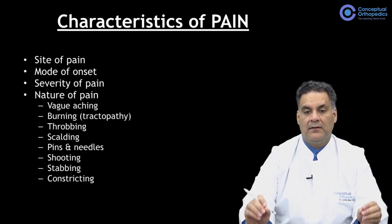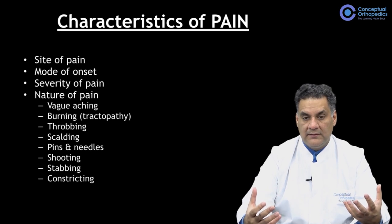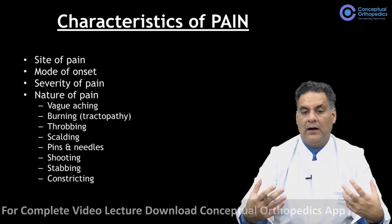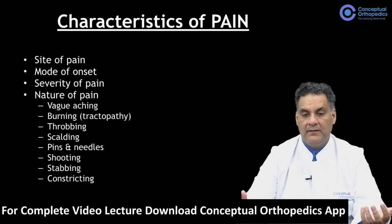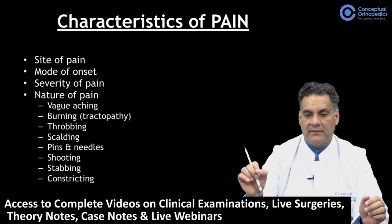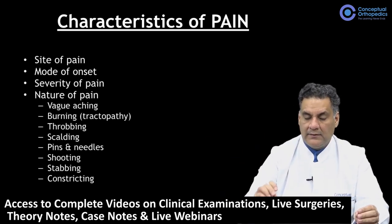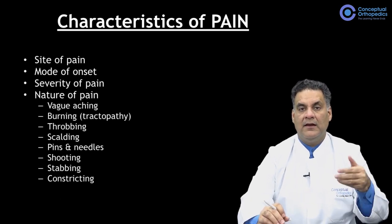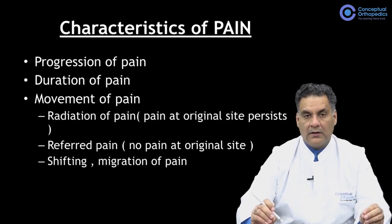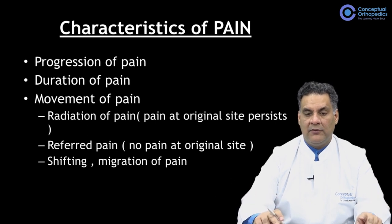Discuss the mode, severity, and nature of pain. Cover the onset, duration, severity, and how the pain progressed. Note whether it is a vague pain, burning pain, throbbing pain, scalding pain, pins-and-needles sensation, shooting pain, stabbing pain, or constricting pain. Talk about the aggravating and relieving factors, the radiation of pain, and movements associated with the pain — whether they are painful or pain-free.